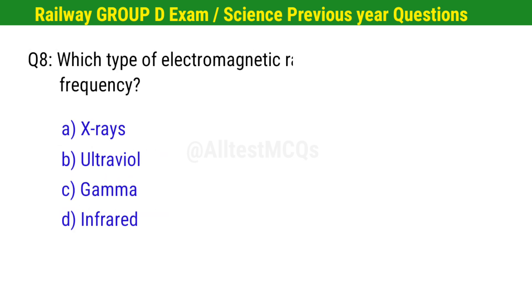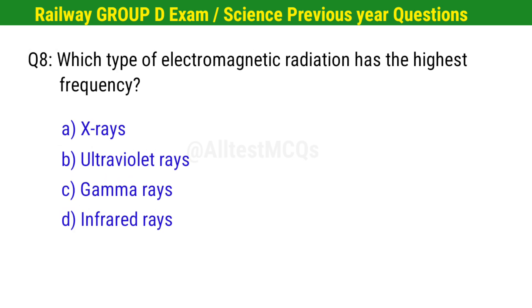Question No. 8. Which type of electromagnetic radiation has the highest frequency? Right option is C. Gamma rays.